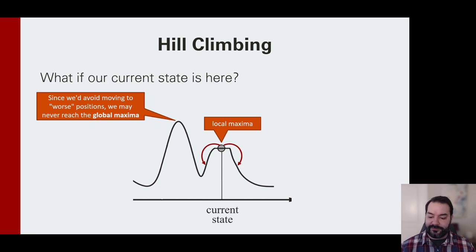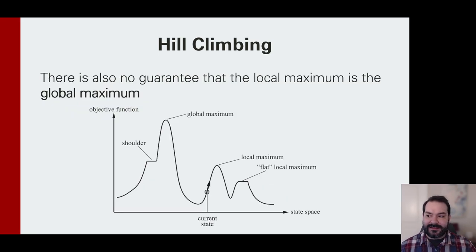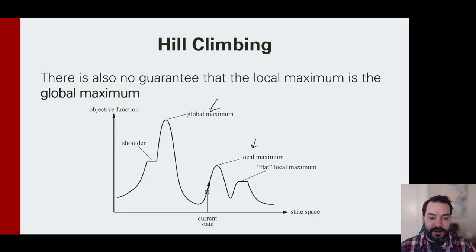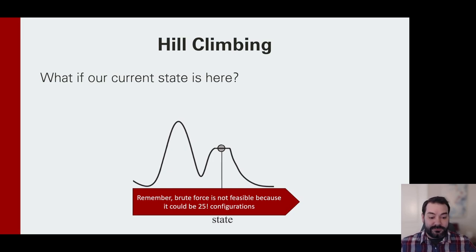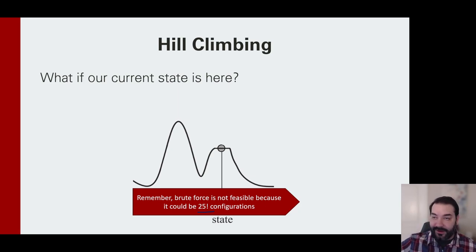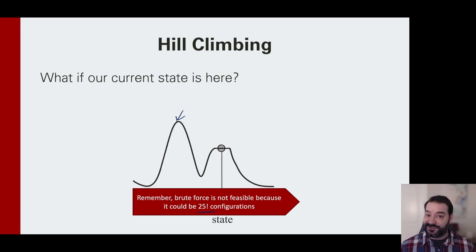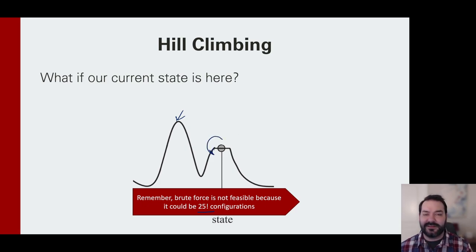We don't dare move anywhere else because everything's worse than what we are. So we're stuck here. The big idea is we're not at the global maximum — we may be stuck at a local maxima. With these types of problems, we can't brute force because if N is 25, that's 25 factorial — it's impossible to check all configurations. These are the limitations of hill climbing. But in the next video, we'll see some approaches that say maybe sometimes it's okay to go down.